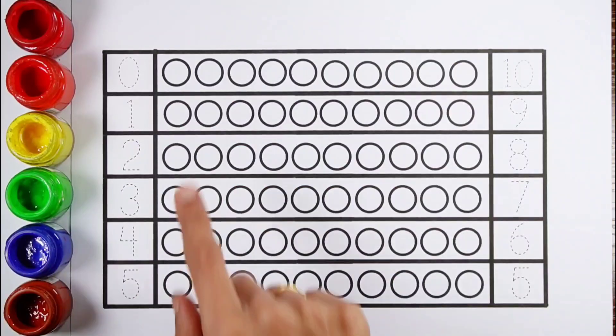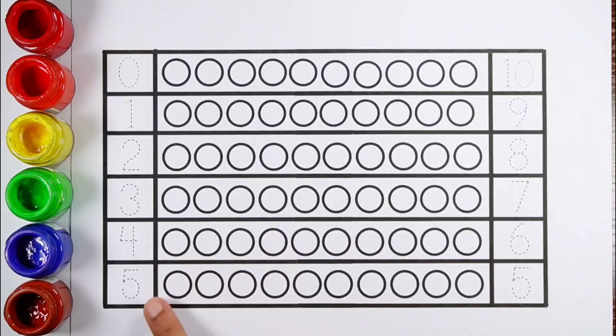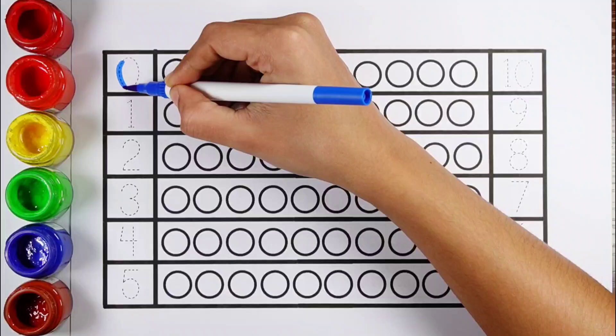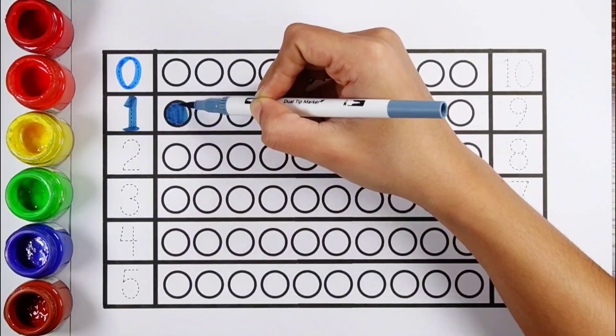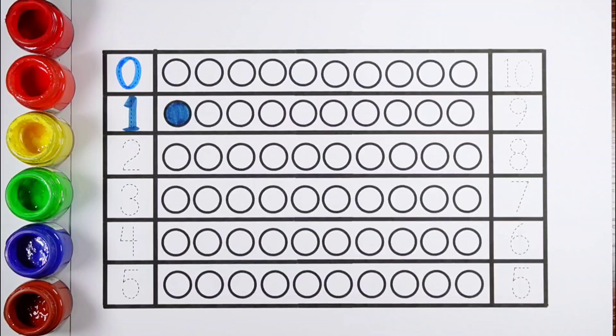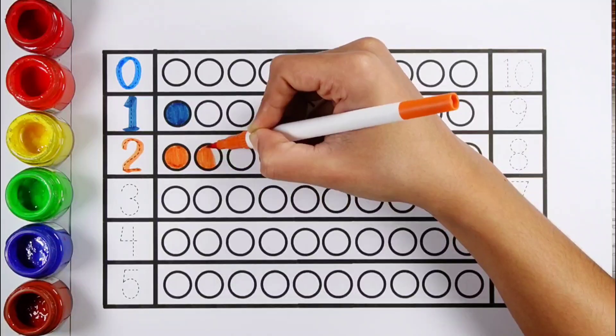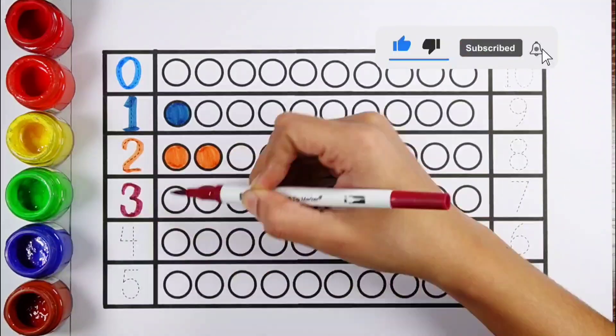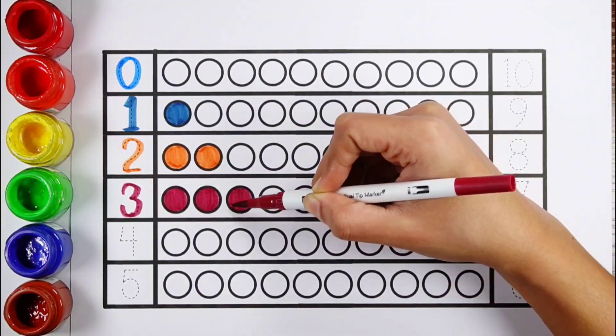Let's learn to count some numbers. 0, 1, 2, 3, 4, 5, 6, 7, 8, 9, 10. Number 1. 1. Number 2. 1, 2. 2 balls. Number 3. 1, 2, 3. 3 balls.